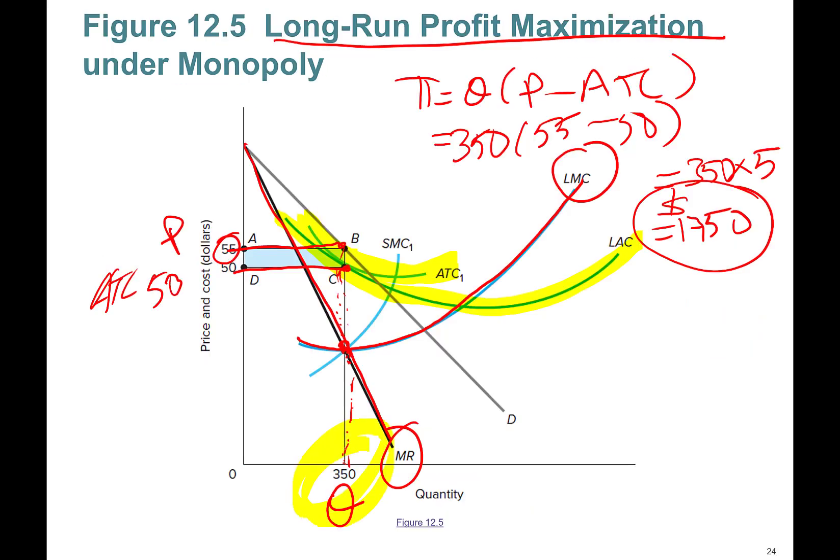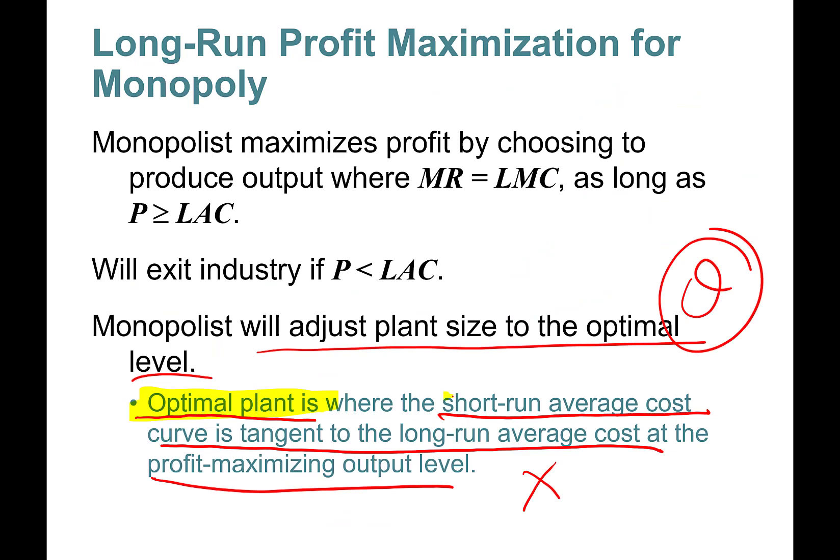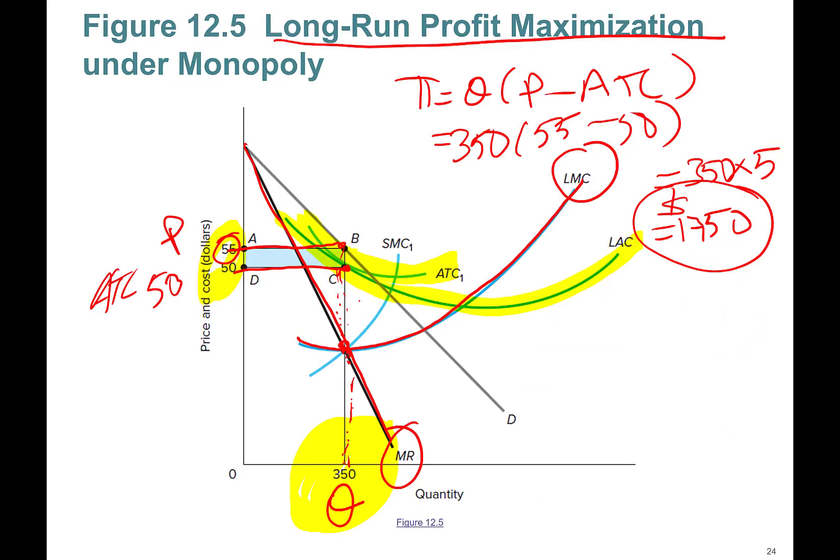Short-run average cost curve is tangent to the long-run average cost curve at the profit-maximizing output level. So at this 350 units, yes, these two curves are tangent. So at this 350, long-run average cost and short-run average cost curve are tangent.